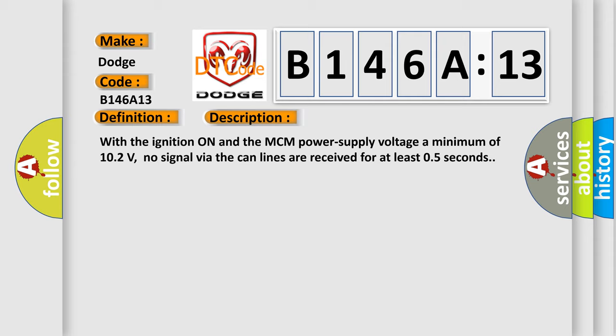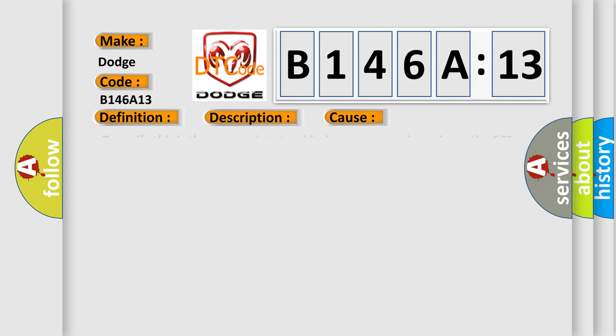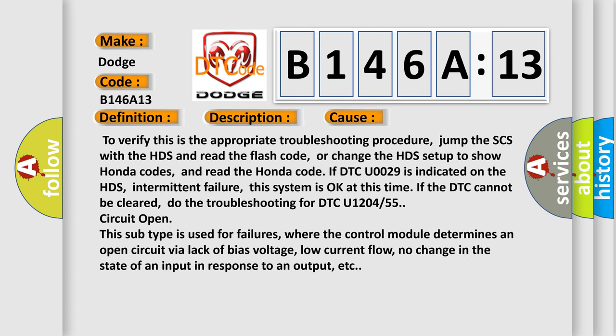This diagnostic error occurs most often in these cases. To verify this is the appropriate troubleshooting procedure, jump the SCS with the HDS and read the flash code, or change the HDS setup to show Honda codes and read the Honda code if DTC U0029 is indicated on the HDS. Intermittent failure: this system is okay at this time if the DTC cannot be cleared, do the troubleshooting for DTC U1204 or 55 circuit open.